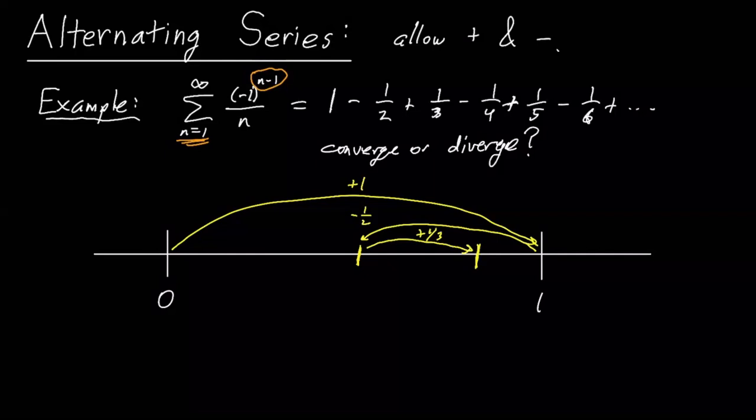Then we do minus a quarter, we end up back over here somewhere, minus a quarter, plus a fifth. Maybe I'll just think about it this way, plus a fifth, minus a sixth. And hopefully you sort of see what's happening here, which is that it's sort of like a spring or something bouncing back and forth or a pendulum or something bouncing back and forth, but it's slowing down.